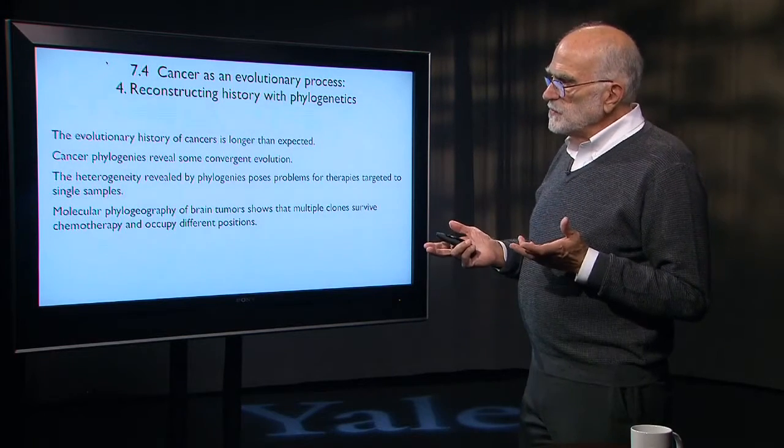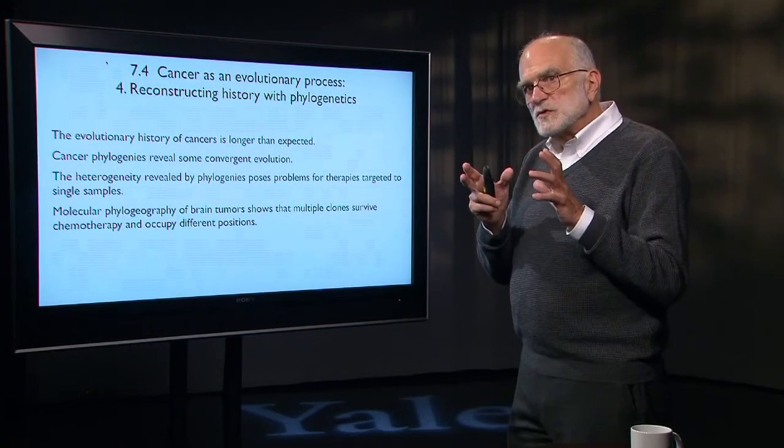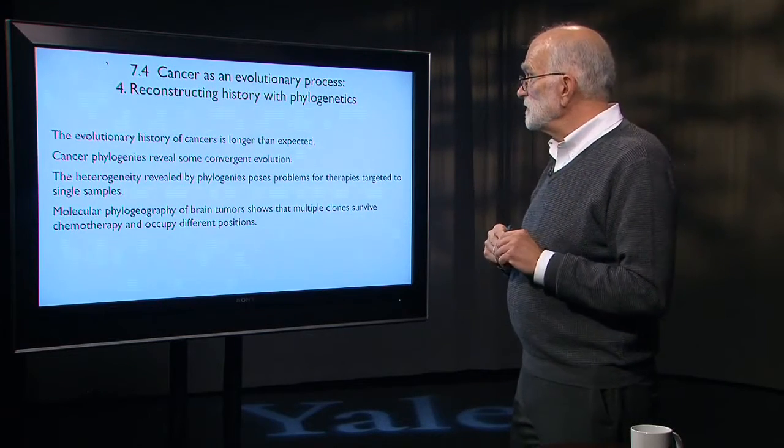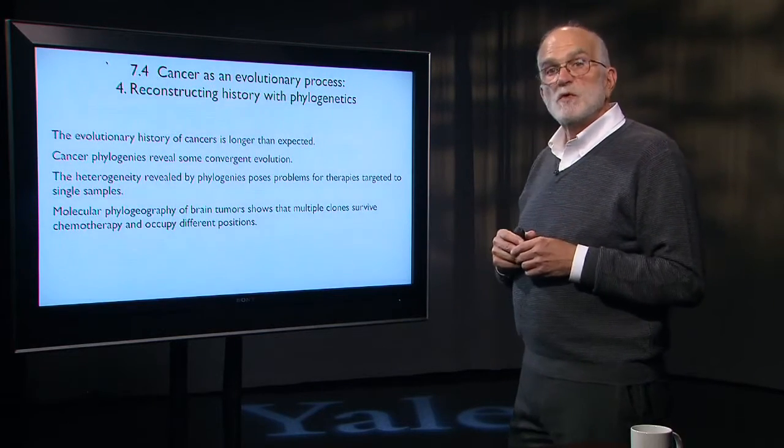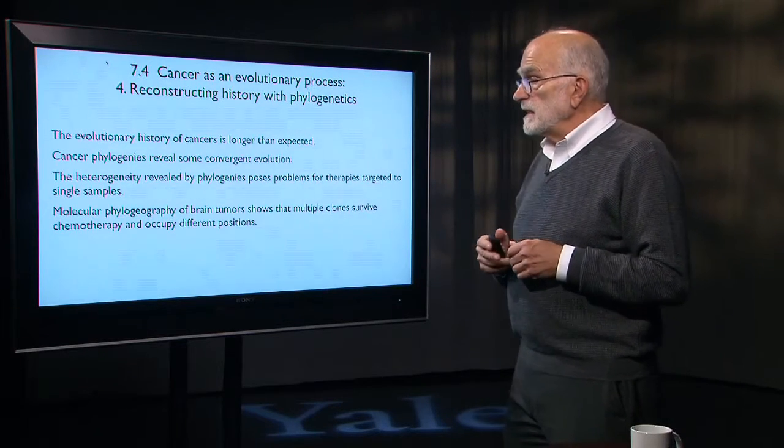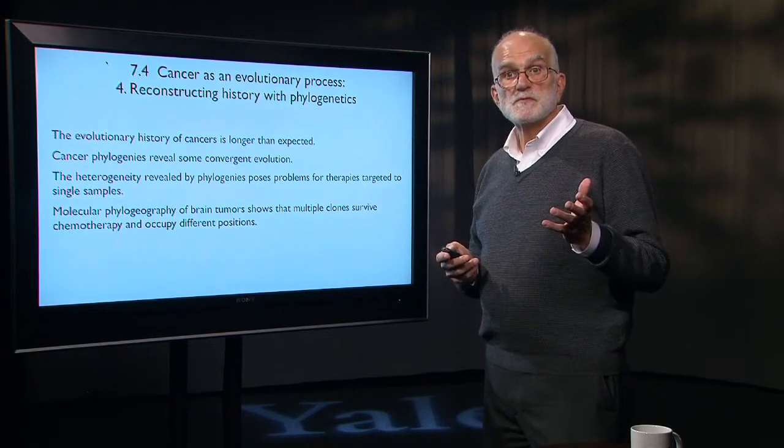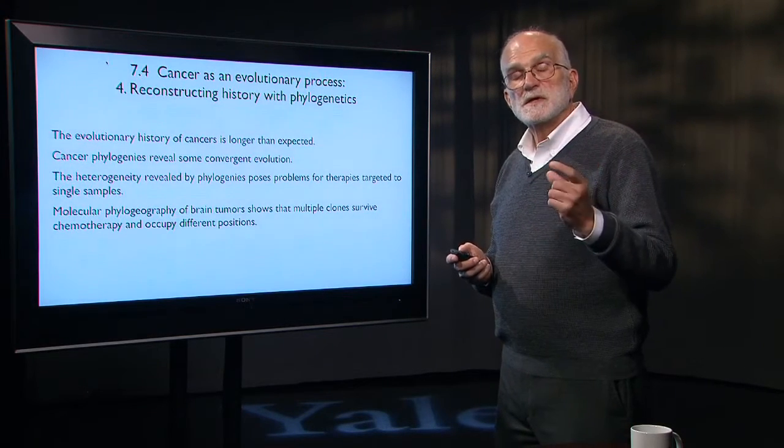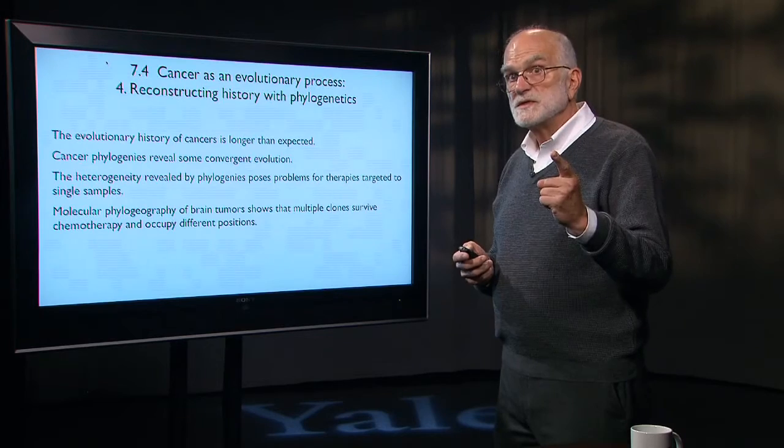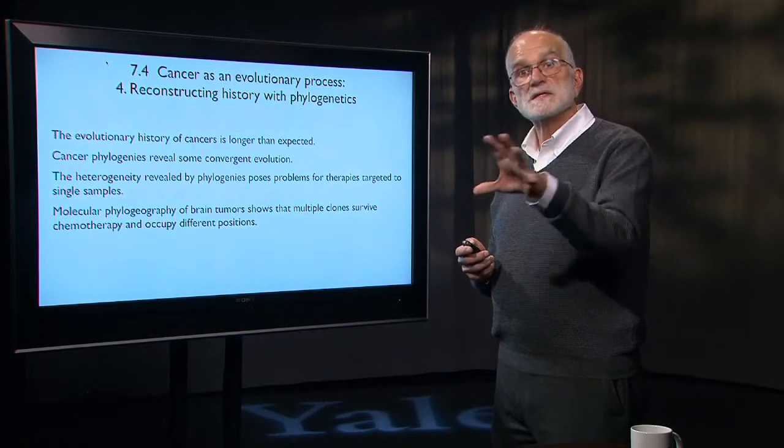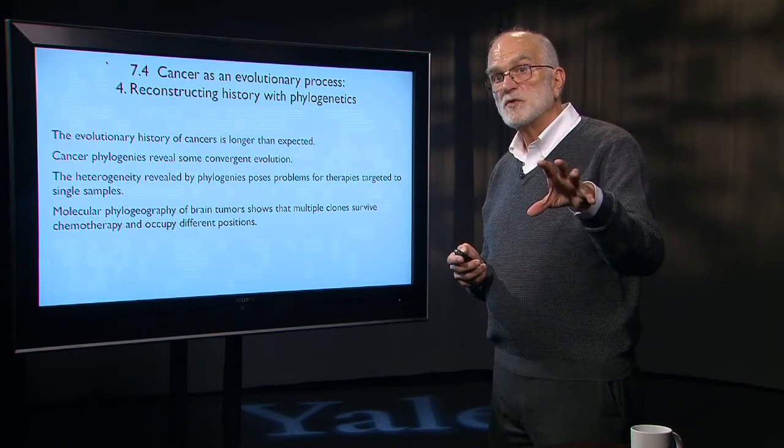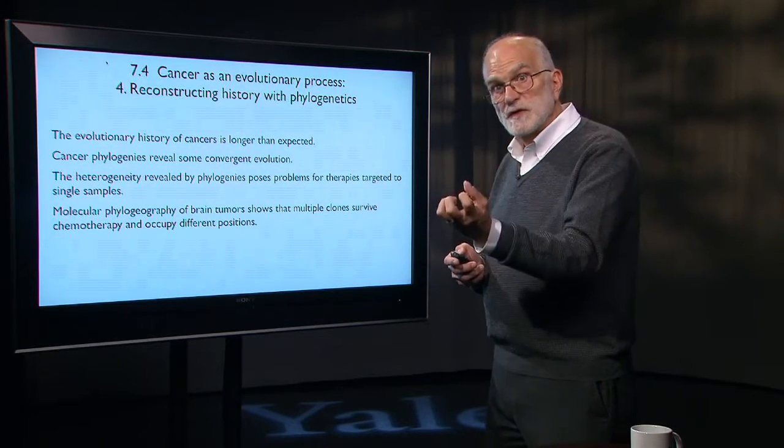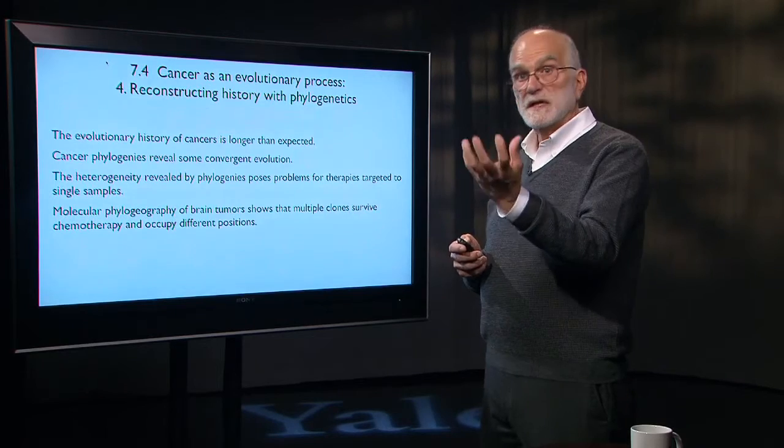When we look into the way that tumors actually move, spread, metastasize within the brain of a single individual, it shows that multiple clones survive and they occupy different positions in the brain. That means that chemotherapy is not just selecting the single most resistant clone—it's selecting a set of clones that have different properties, which means that genetic diversity survives and is available for the next round of chemotherapy, and can defeat it.